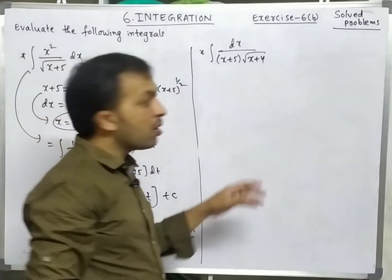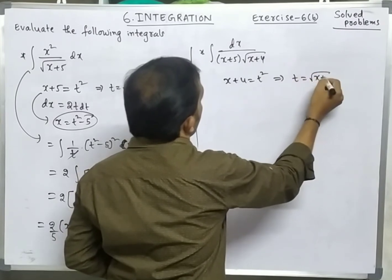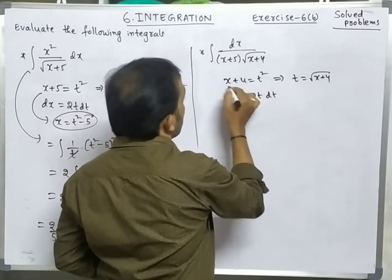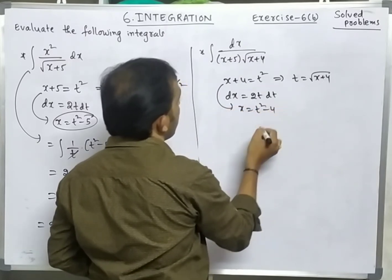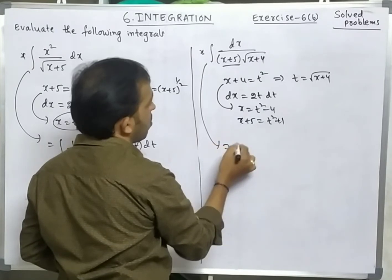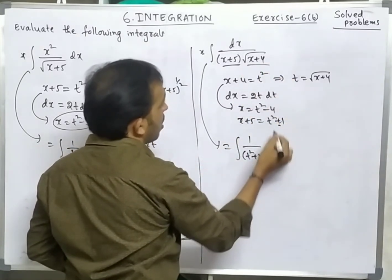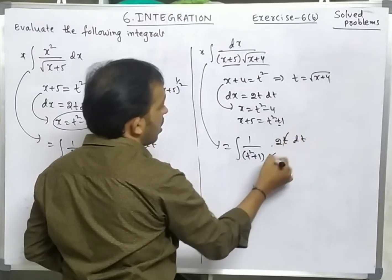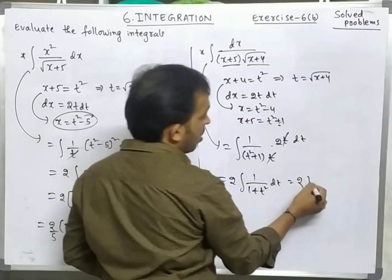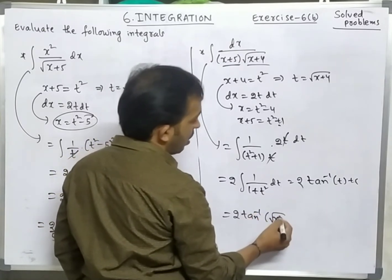Similarly, solve integration of 1/((x+5)·√(x+4)) dx. Let x+4 = t², so t = √(x+4) and dx = 2t dt. Then x = t²-4, and x+5 = t²+1. Substituting: 1/((t²+1)·t) · 2t dt — t cancels, giving 2·integration of 1/(1+t²) dt = 2·tan⁻¹t = 2·tan⁻¹(√(x+4)) + c.